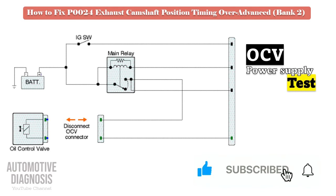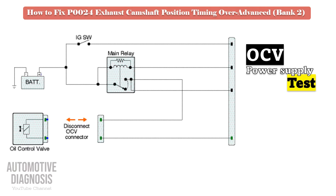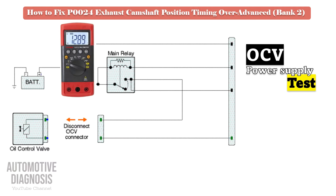For testing the OCV power supply voltage, turn the ignition on with the bank 2 exhaust OCV connector disconnected. Then check the supply voltage using a multimeter on the relevant pin. In this test, you must measure battery voltage on the multimeter.